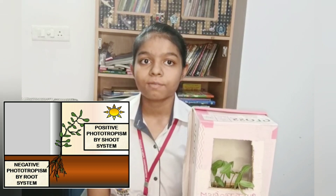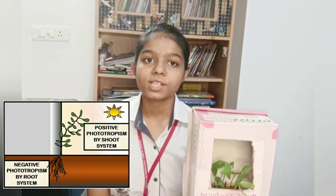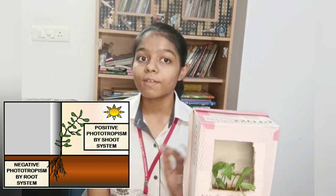Environmental triggers such as light or gravity will change the direction in which the plant part grows. Two kinds of phototropic movements can be seen in plants: the shoots bent towards sunlight, which is known as positive phototropism, while the roots bent away from it, which is known as negative phototropism.